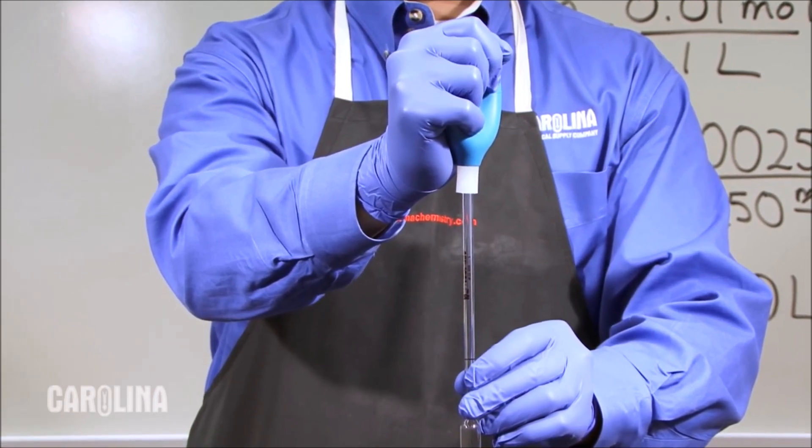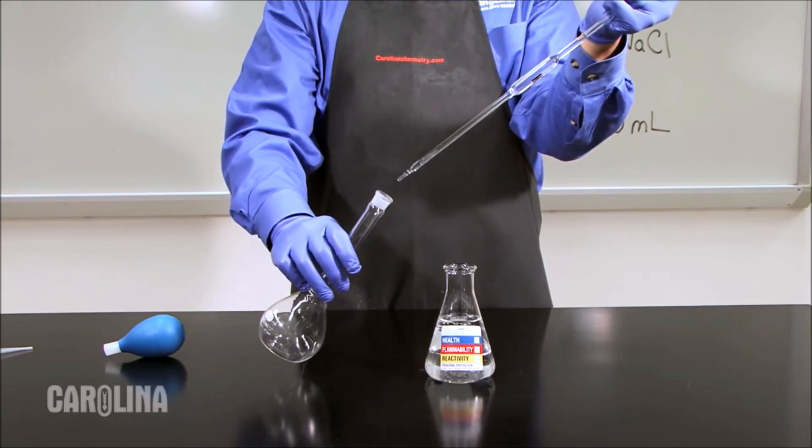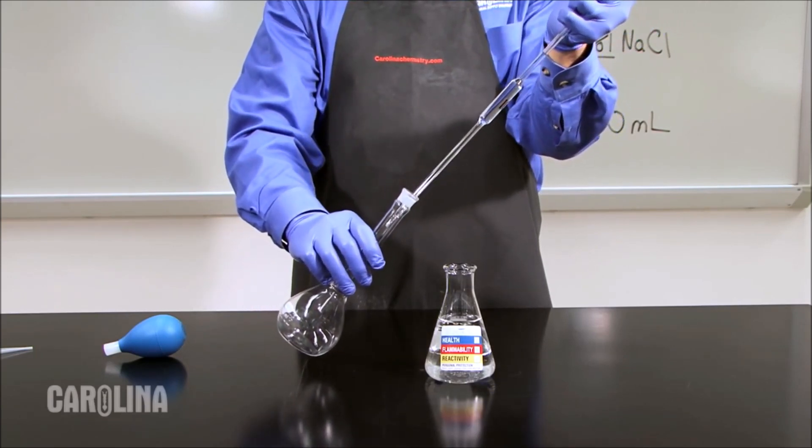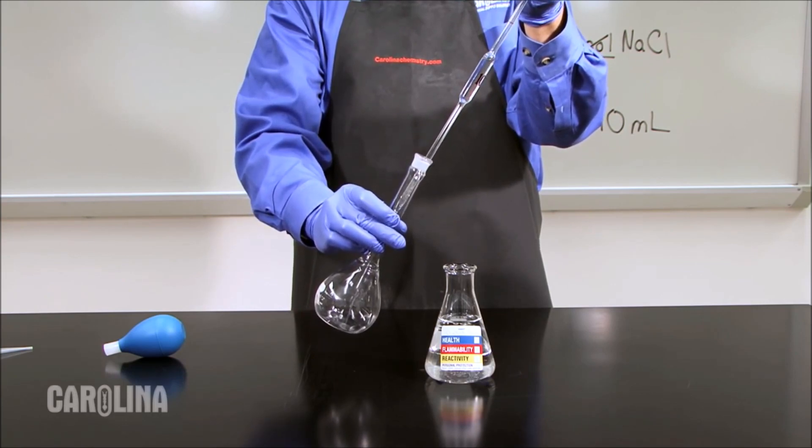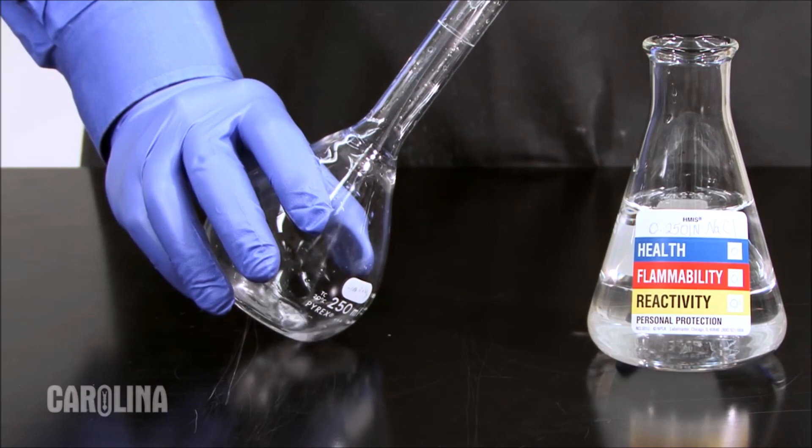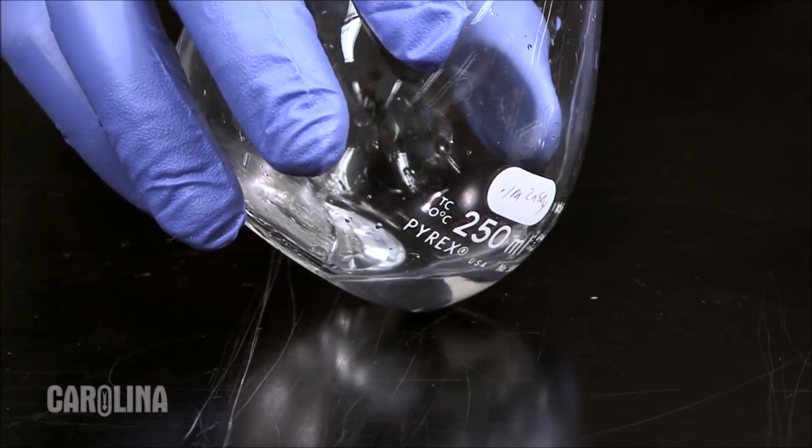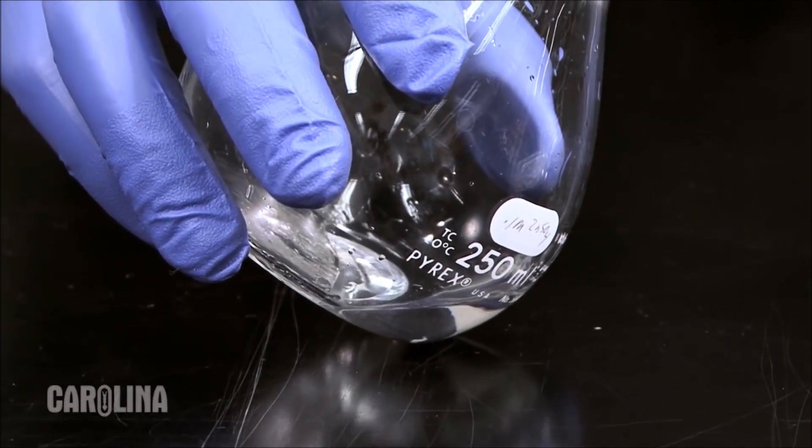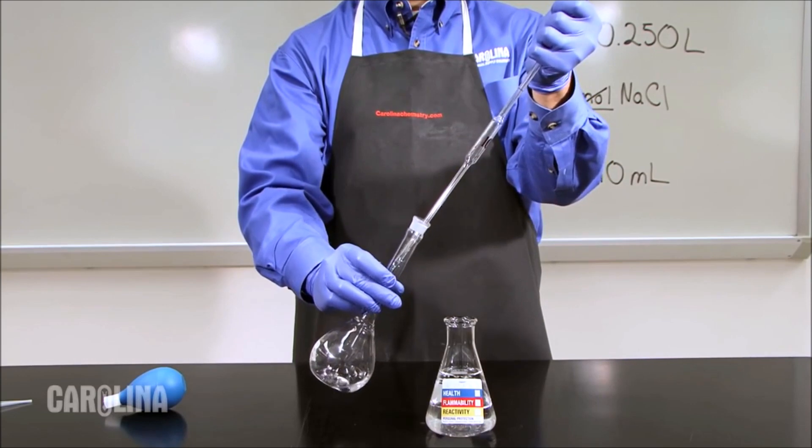Never pipette by mouth. Once you have the exact amount of liquid required in the pipette, hold your thumb firmly over the end and transfer the pipette to a new volumetric flask. In this case, a clean 250 milliliter volumetric flask. Allow all of the liquid to flow out of the pipette. Do not use the bulb to force the liquid out, as pipettes are designed to deliver the exact amount of liquid, and there may be a small amount of liquid remaining at the end.